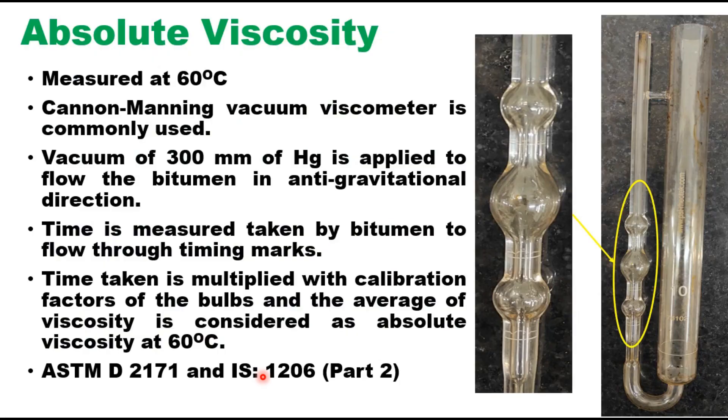In the case of absolute viscosity which is measured at 60 degree centigrade generally Cannon Manning vacuum viscometer is used and this is the tube of Cannon Manning viscometer. This procedure is given in ASTM D 2171 and also in IS 1206 part 2.